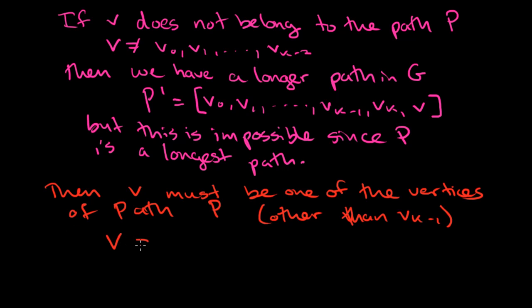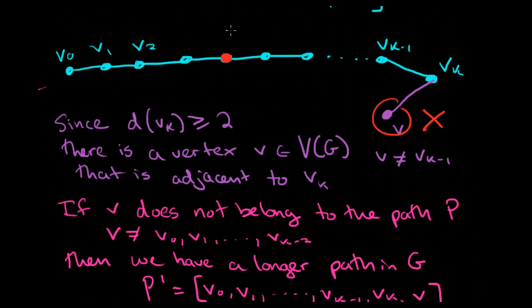So V must equal Vi for some i, where 0 could be less than or equal to i, less than or equal to k minus 2. So that's what we've got up here. For some Vi, that's where the vertex V actually lies. So this is where the edge is.